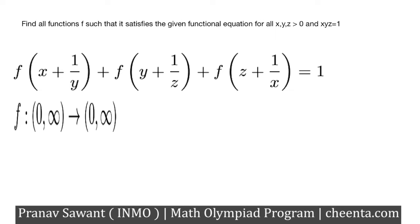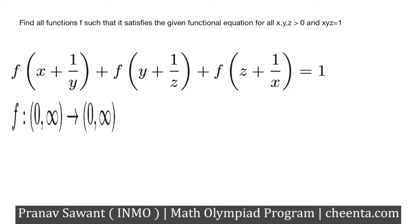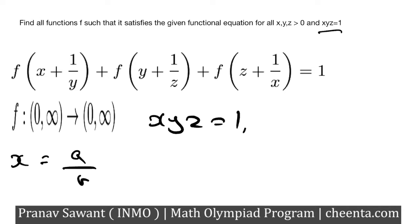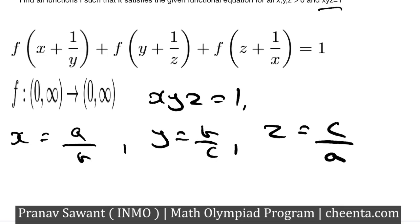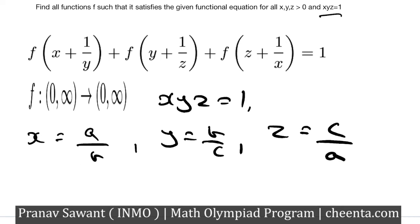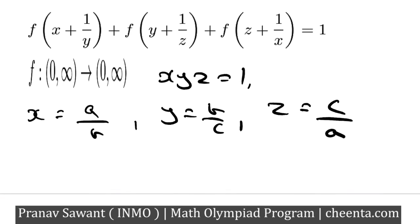Let's get started. We basically need to find all functions f that satisfy the given functional equation for all x, y, and z greater than zero, where xyz equals one. The first observation we can make is: since xyz equals one, we can write x as a/b, y as b/c, and z as c/a. This is a known trick we employ whenever the product of three numbers is one. Now rewriting the given functional equation in terms of a, b, and c, we get f(a+c/b) + f(a+b/c) + f(b+c/a) equals one.